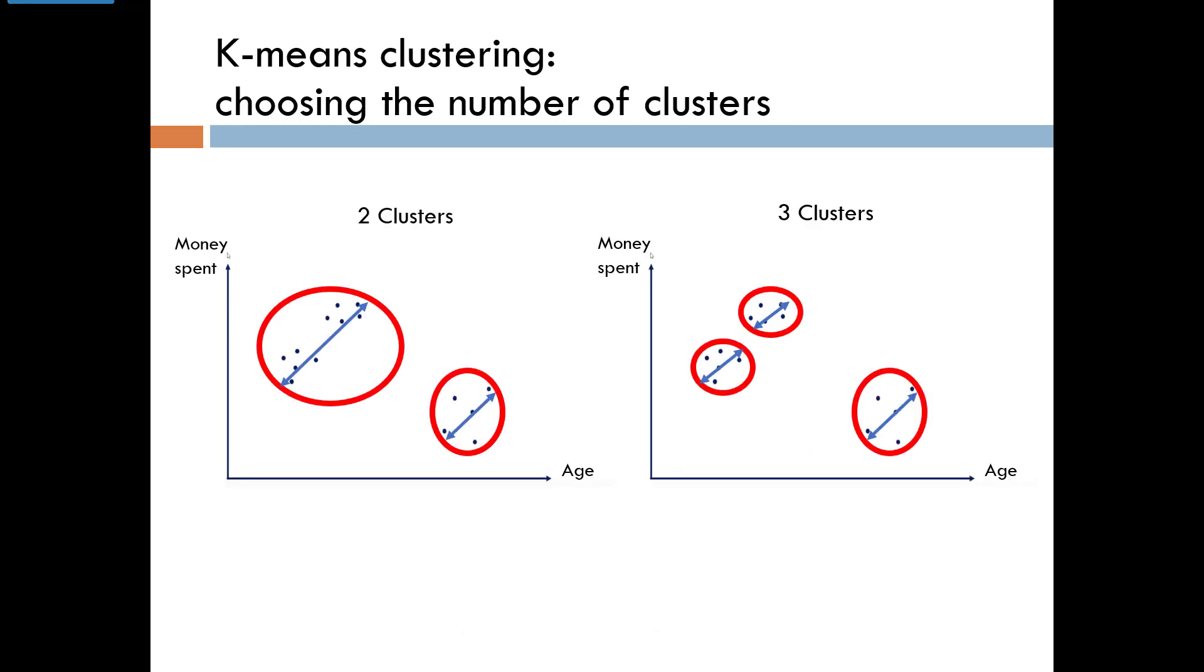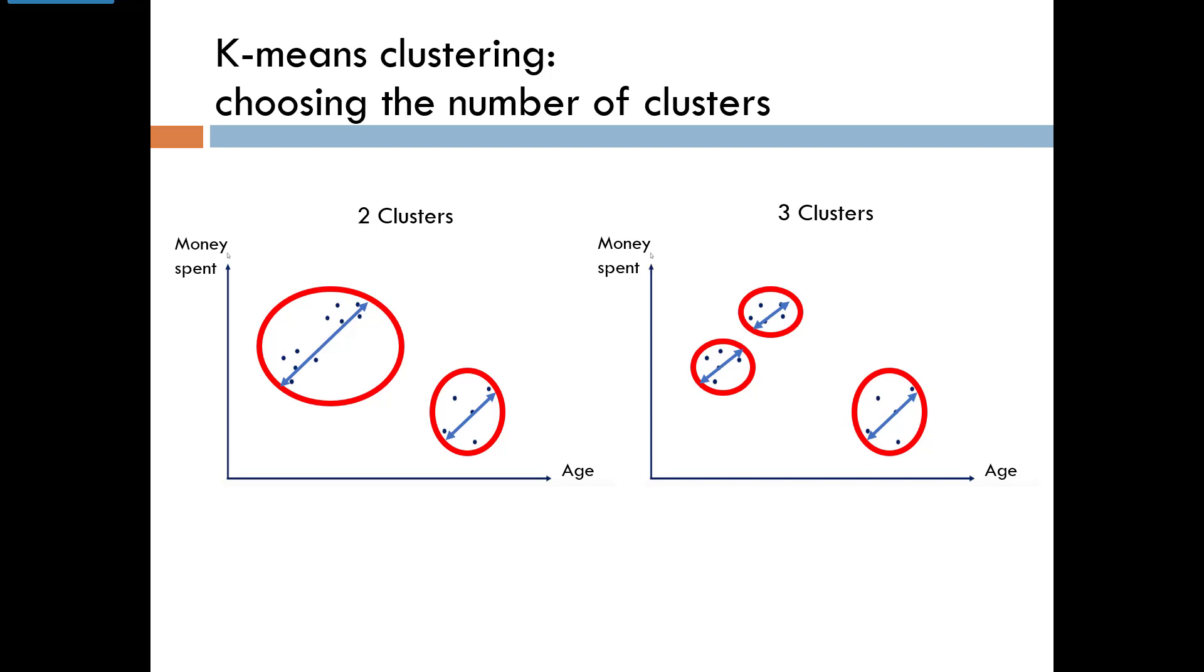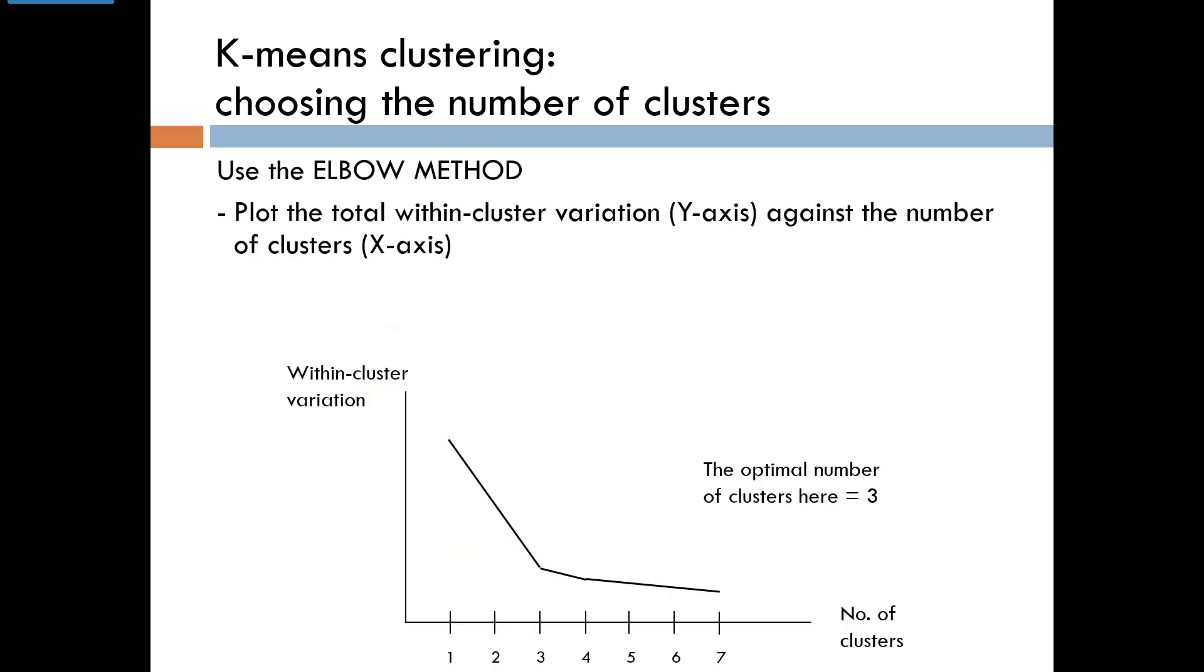For example, look at the plots with two clusters and with three clusters. With two clusters, the points in the left cluster are further from the centroid, so the total variation is higher than with three clusters. This shows that the total within cluster variation will always be lower with more clusters. The question is, is it lowered enough to justify the greater complexity of having one more cluster?